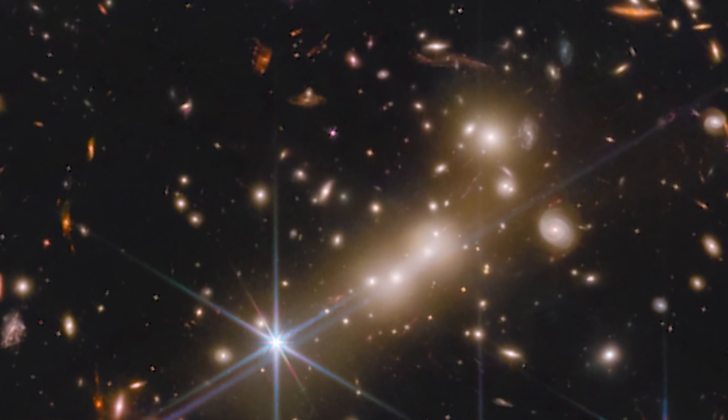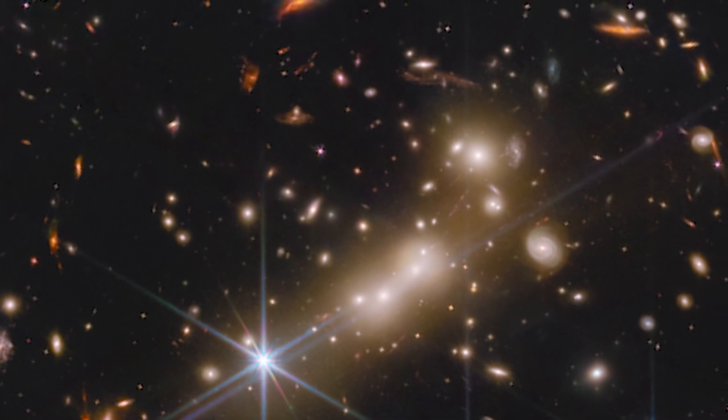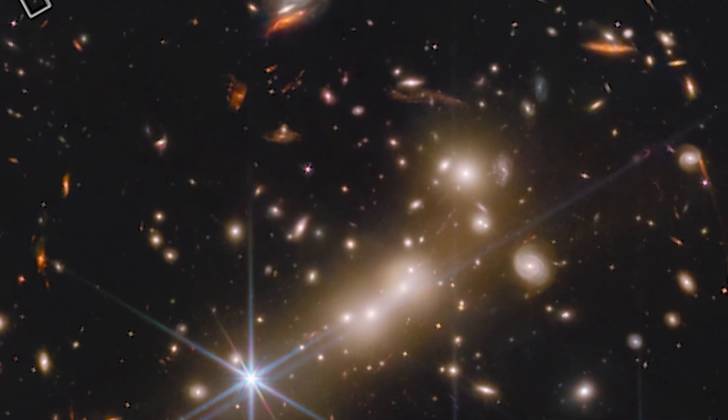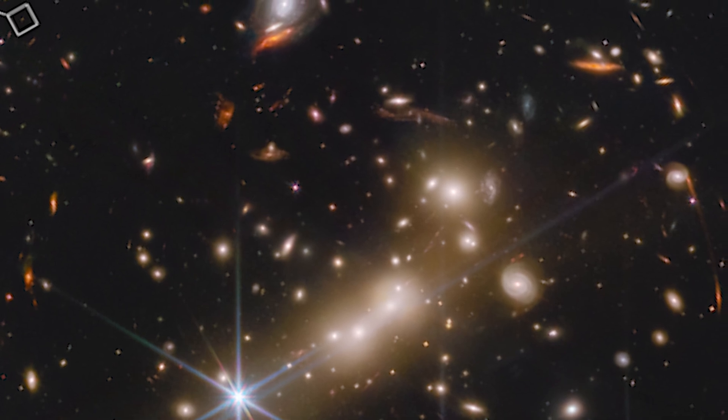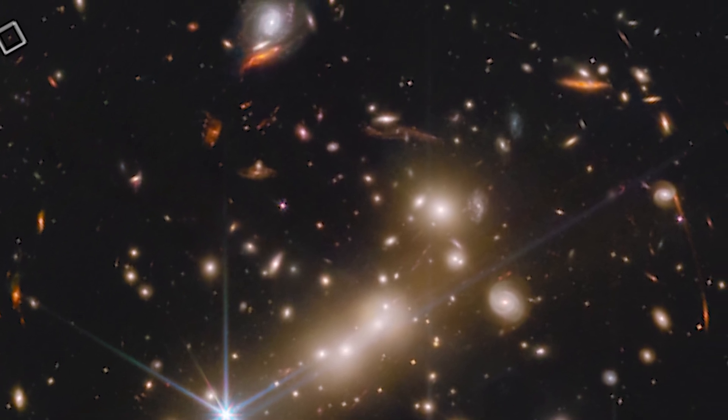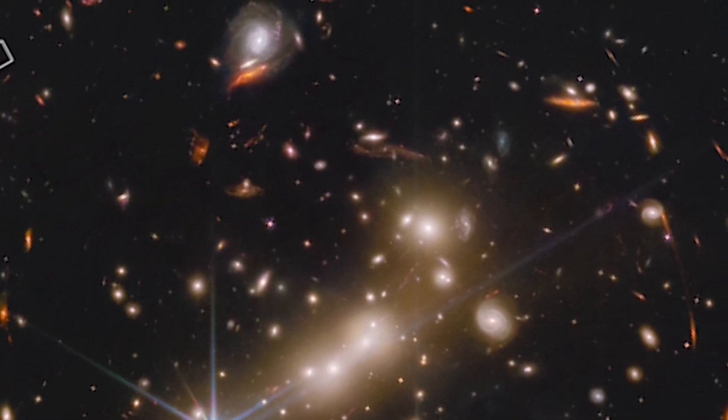In the backdrop of this picture, as well as every new Webb image we get, you'll see a lot of tiny dots. Those are galaxies, each and every one. There is so much data we are now able to view that just wasn't there previously.